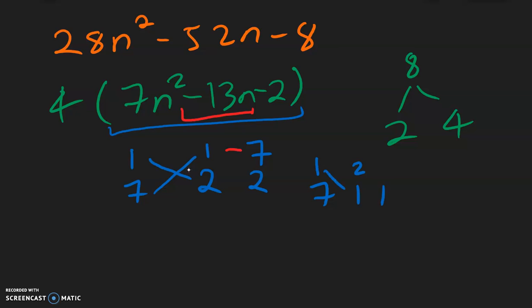So 1 times 1 is 1. 7 times 2 is 14. And that looks promising because 14 needs to be negative. And then to make negative 13, we can go negative 14 plus 1 for negative 13.